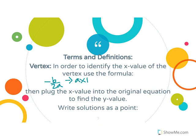The axis of symmetry uses that same equation, negative b over 2a. Once you get the x-value of your vertex, you plug that x-value into the original equation to find the y-value. You always write your solution as a point, written as x comma y.